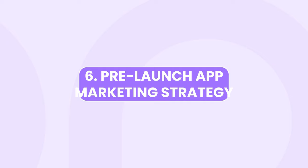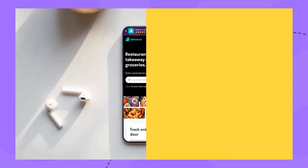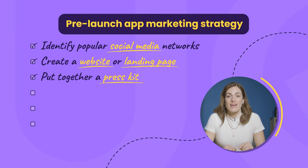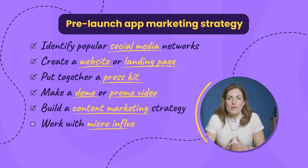Moving on to step six: your pre-launch app marketing strategy. The following tactics are going to help you generate awareness. Identify the social media networks that are popular with your audience and set up your accounts so you can start creating a buzz. Create a website or landing page to get across your app's value to potential users, and to provide a clear call to action to download your app from the app stores. Put together a press kit and get pitches out to relevant journalists and bloggers. Make a demo or promo video that highlights your app's values. Build a content marketing strategy that'll attract and engage users, and work with micro-influencers your users follow to boost brand awareness and build on that pre-launch buzz.